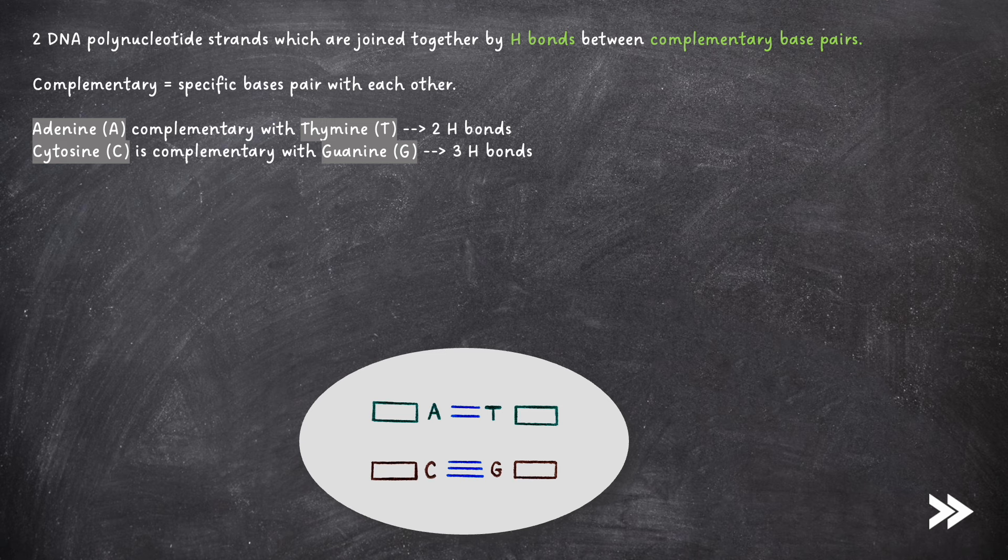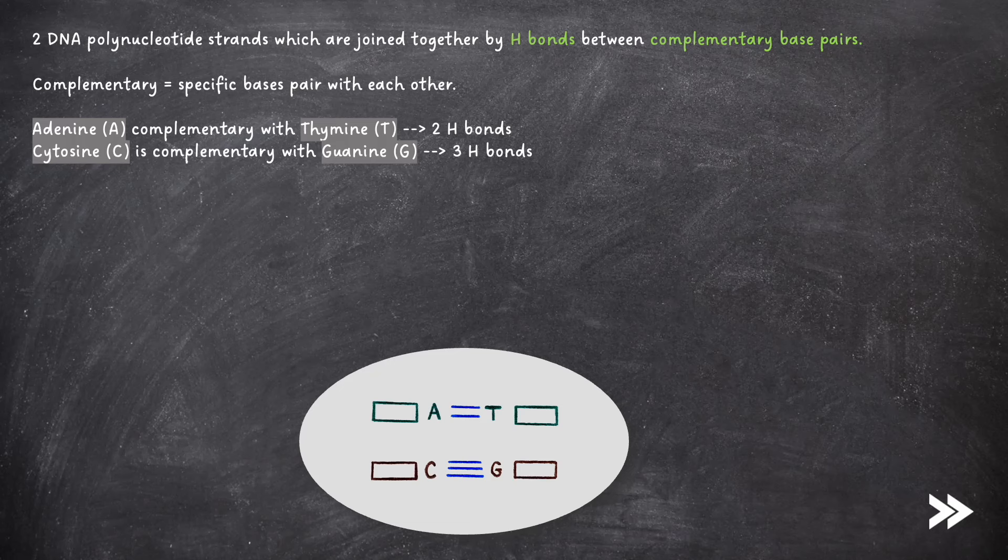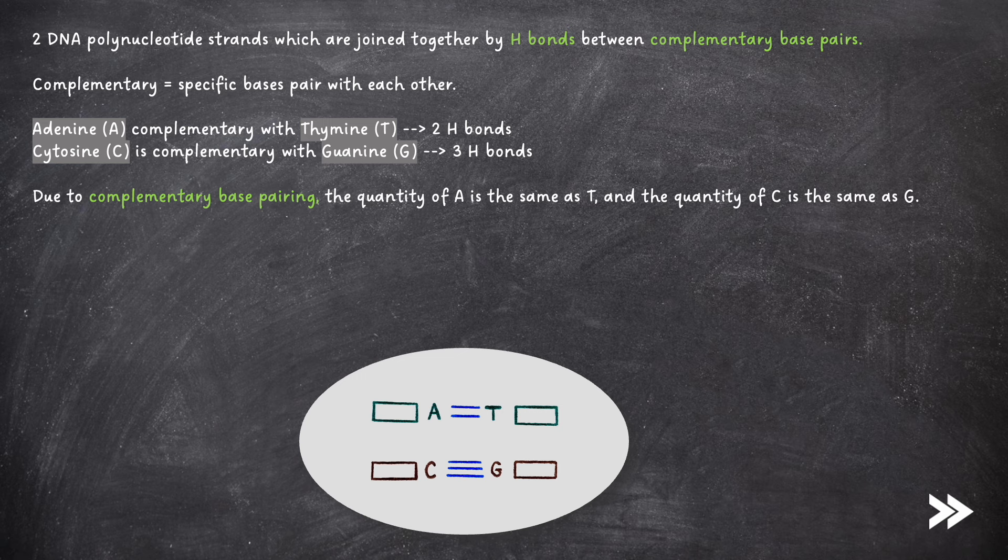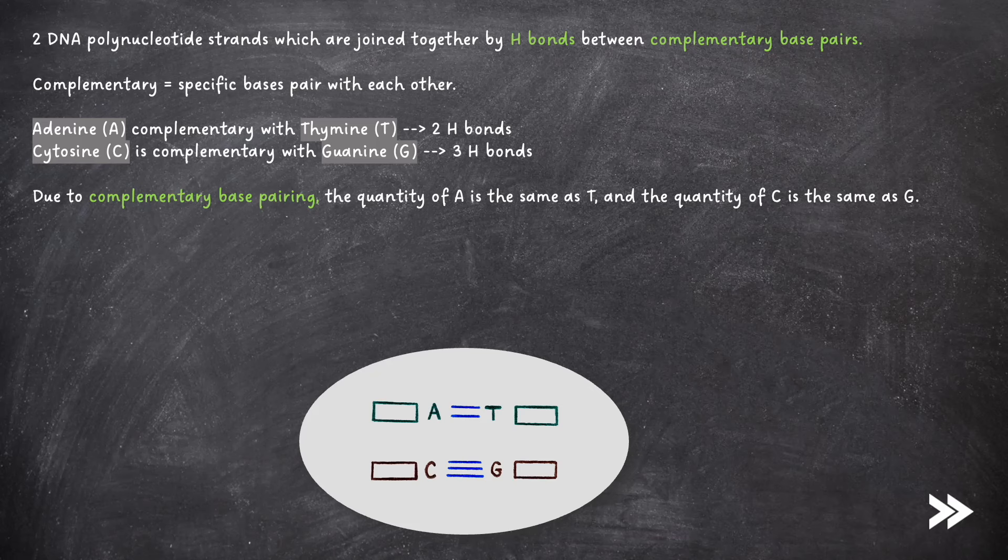Remember to always give the full name of nucleotides. I've just abbreviated them for simplification purposes. Due to complementary base pairing, the quantity of adenine is the same as thymine, and the quantity of cytosine is the same as guanine. In an exam, for example, you may be given the percentage of adenine, and then you'd have to deduce that the percentage of thymine is the same as that of adenine.